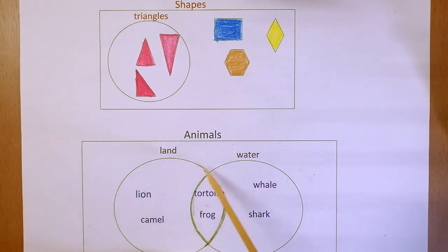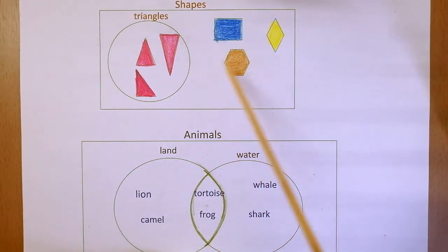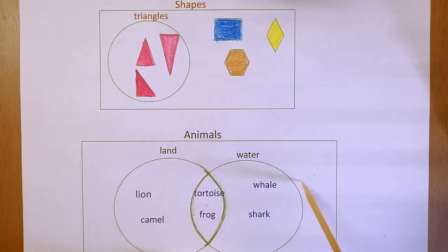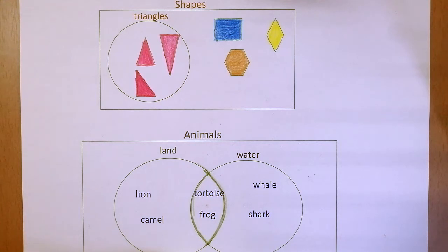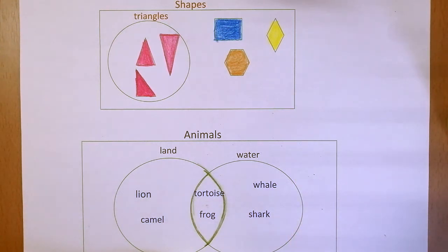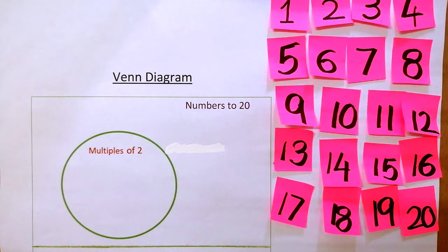Tortoise and frog are placed in the overlapping part because these animals live on both land and in water. When we use two sorting rules in a Venn diagram, we always intersect the circles — we don't put the circles separately. That way, anything common to both groups can be shown in the overlapping part. This Venn diagram is made using two sorting rules. Now let's work on some more examples using both one and two sorting rules.